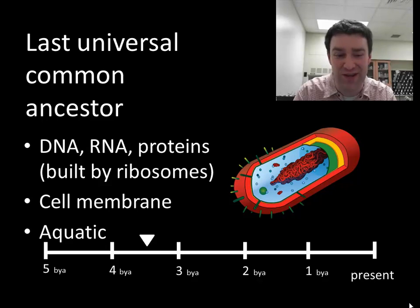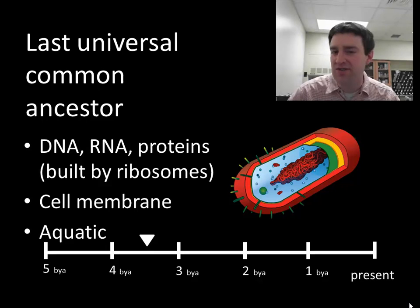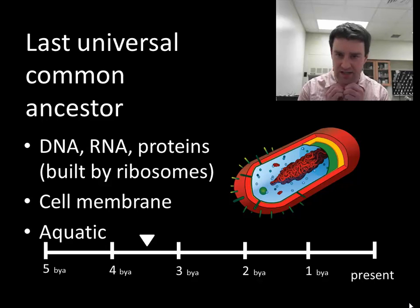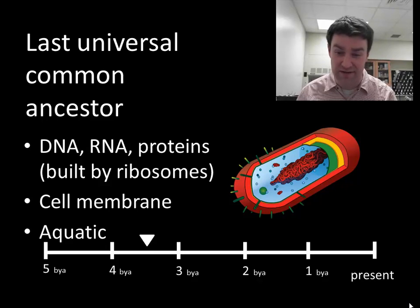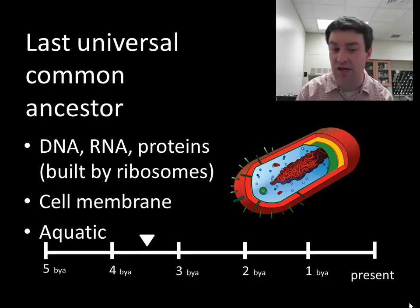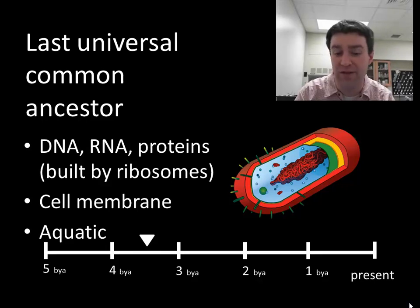We don't know — that would be the short answer. But where I want to start this video is with a theoretical construct called the last universal common ancestor to all modern life. What do we think was true of the group of cells that led to all the diversity of life we see today? These are very simple characteristics, probably very similar to the prokaryotic cells we see today: some kind of master DNA code that could be copied by RNA to help make proteins, very basic metabolic pathways to make energy and reproduce, and some kind of membrane to control what goes in and out. We think that life started in the oceans.